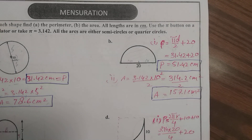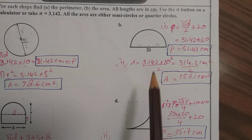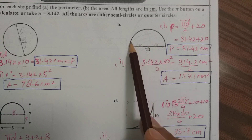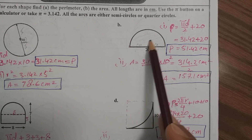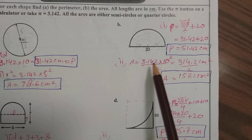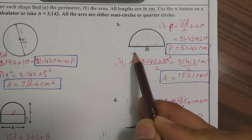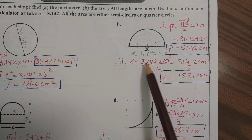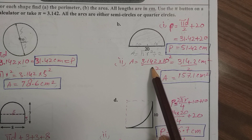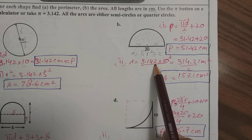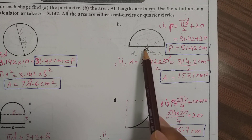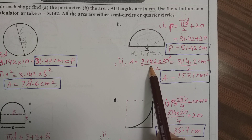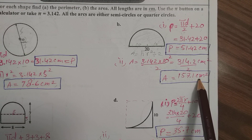Now we need to find the area of the semicircle. The area is the space occupied by the shape. Since it is a semicircle, we use pi r squared divided by 2. Using pi as 3.142 and diameter as 20, we divide 20 by 2 to get radius equals 10. Substituting and simplifying gives the answer 157.1 centimeters squared.